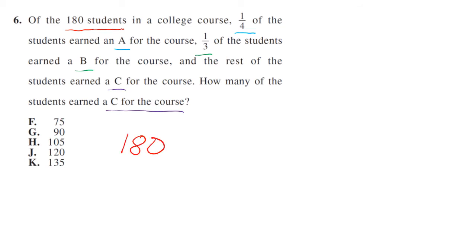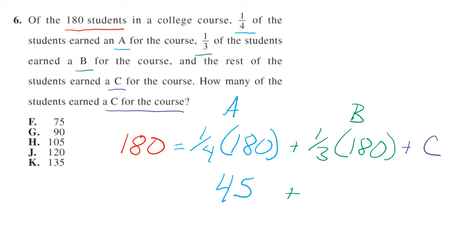So we have 180 total. And then one-fourth of those, one-fourth of 180, are A students. And then we have one-third times 180 are B students, and the rest are C students. So let's call them C. So one-fourth of 180, or 180 times one-fourth, is 45. And then one-third times 180 is 60, or 180 divided by 3 is 60, plus C again. And that all equals 180.